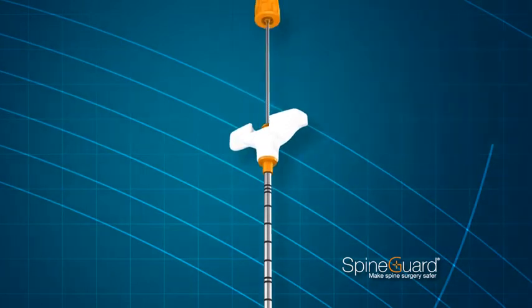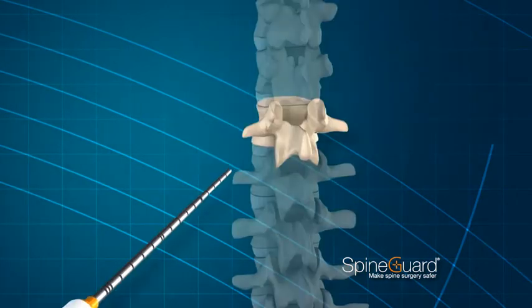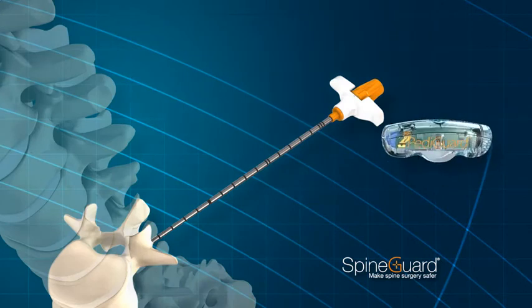By measuring the local electrical conductivity of the bone tissue at its tip five times per second, PediGuard can alert you before you breach in all planes.